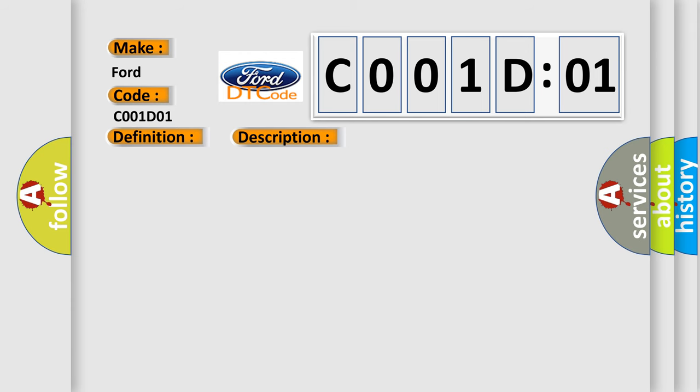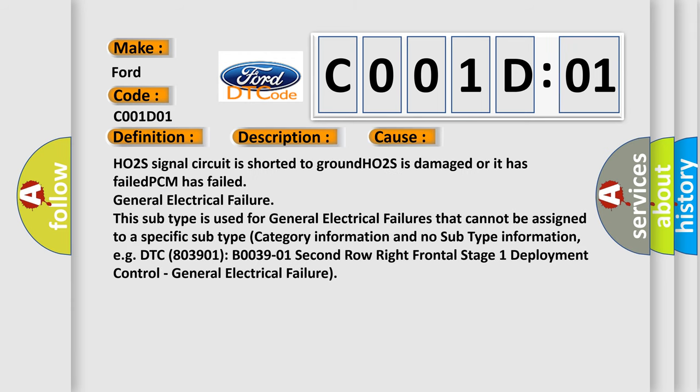This diagnostic error occurs most often in these cases: HO2S signal circuit is shorted to ground, HO2S is damaged or it has failed, PCM has failed, General Electrical Failure. This subtype is used for General Electrical Failures that cannot be assigned to a specific subtype category information and no subtype information, e.g. DTC B003901 2nd Row Right Frontal Stage 1 Deployment Control General Electrical Failure.